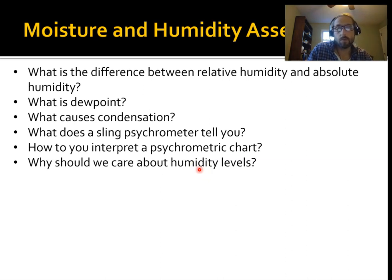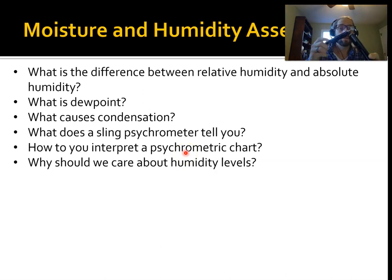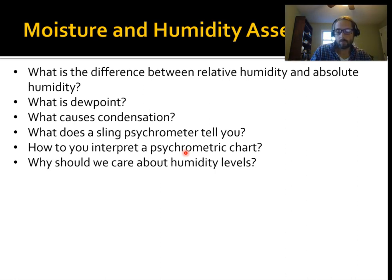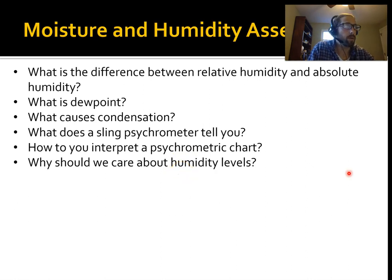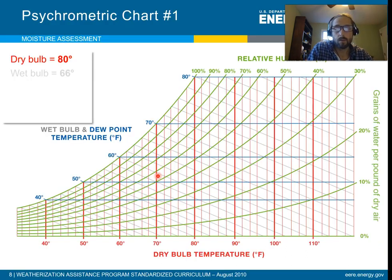Here we're going to go over how to interpret a psychrometric chart. We've already gone over what a sling psychrometer tells you — the sling psychrometer is this thing that you spin around, and it tells you the dry bulb and the wet bulb temperature. Here we're going to look at psychrometric charts and how you can interpret them, and also some aspects of humidity levels and why we should care about them. This is actually a simplified psychrometric chart.